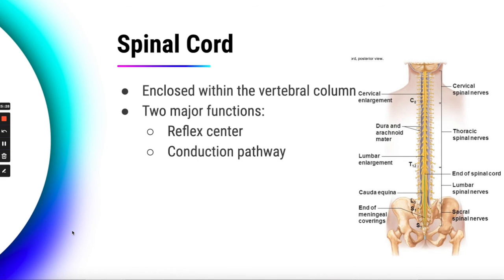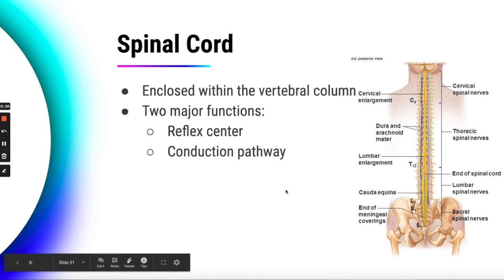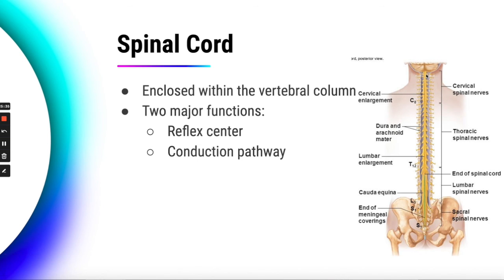Finally, the spinal cord is enclosed by the vertebral column. It extends from the base of the medulla oblongata down to the top of the lumbar vertebrae. There are two major functions: one is as a reflex center — most reflex signals don't travel all the way up to the brain but just go to the spinal cord and back. The other function is as a conduction pathway to get information up to the brain and back down to other parts of the body.